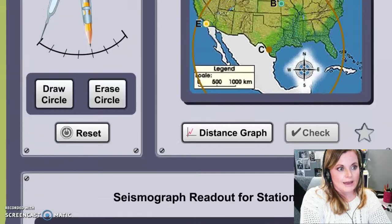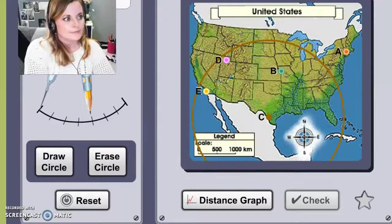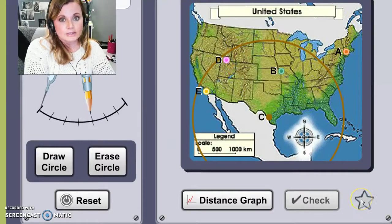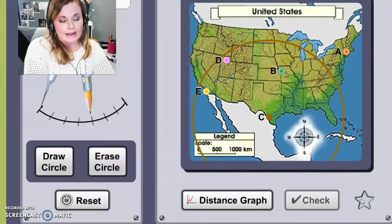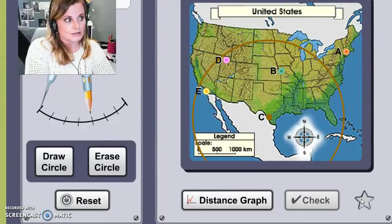And once you get three circles on your map, you should be able to determine the epicenter of the earthquake. And when you do that, you can click on this little star here and it will let you know if you are correct or if you are incorrect. So then you need to tell me what the epicenter actually is.